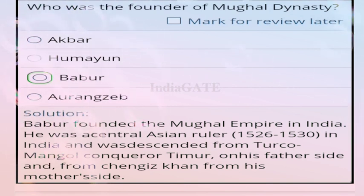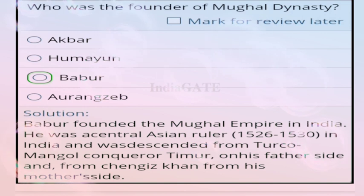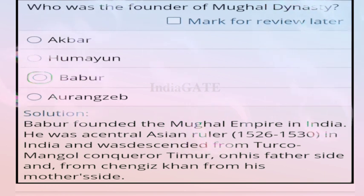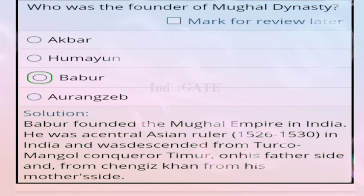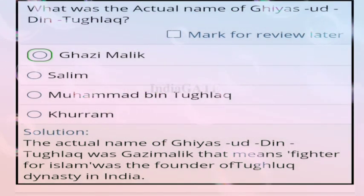Question 88: who was the founder of the Mughal dynasty? Correct answer is option C, Babur. Babur founded the Mughal Empire in India. He was a Central Asian ruler who ruled from 1526 to 1530, descending from Timur on his father's side and Genghis Khan on his mother's side.